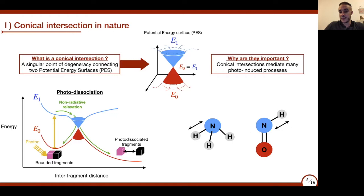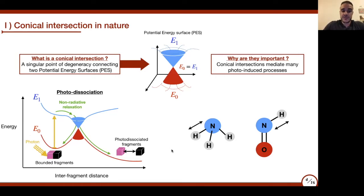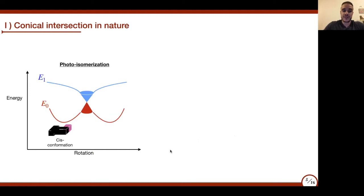This is something well known in quantum chemistry, and has been studied in many molecules—for example, in ammonia and OH, where many studies focus on the dissociation of one hydrogen atom based on this kind of potential energy surface and the presence of a conical intersection. But conical intersections are not only present in photodissociations—they also play a key role in what is called photoisomerization.